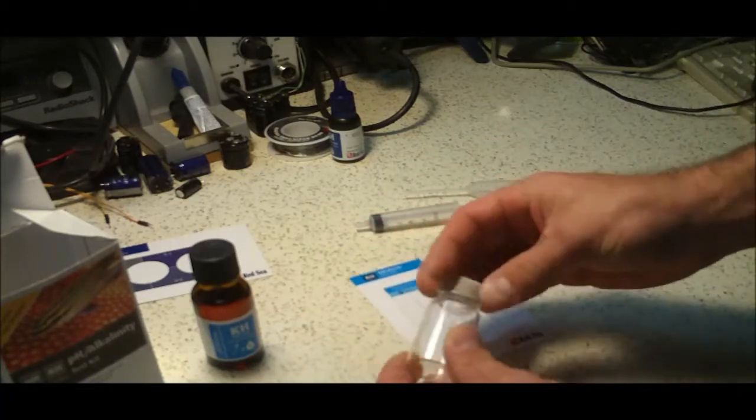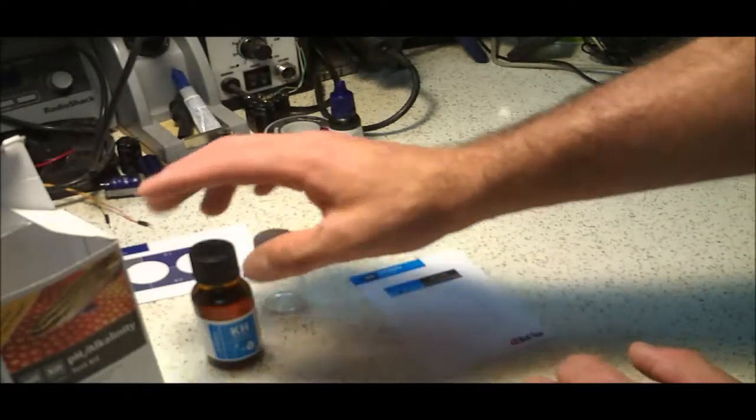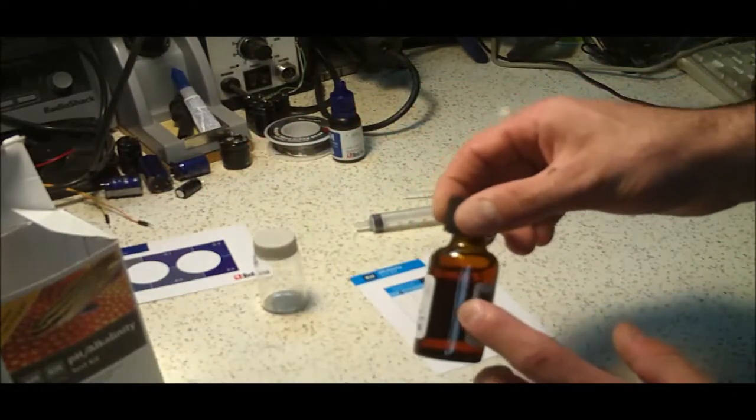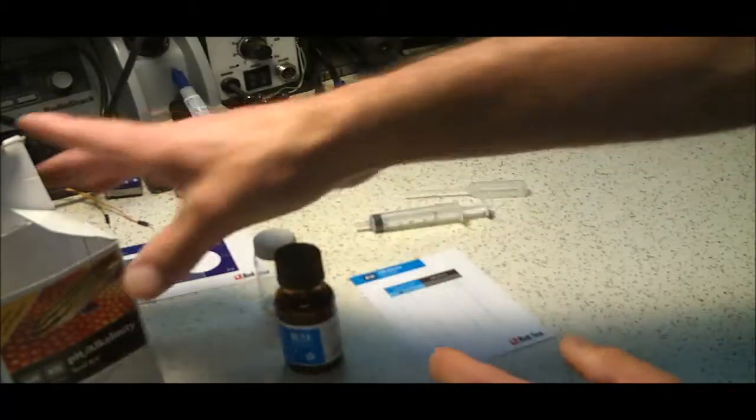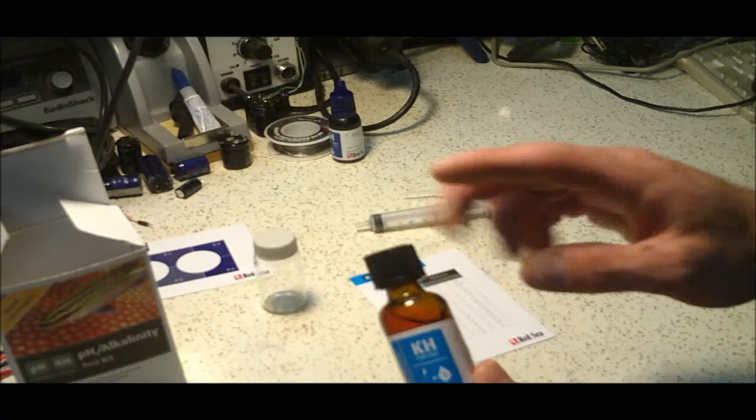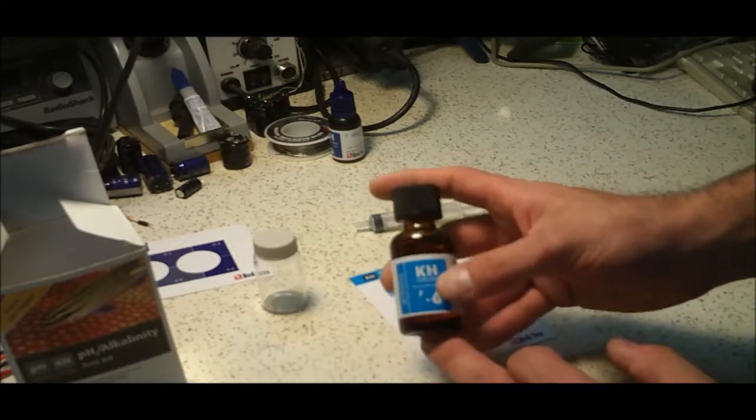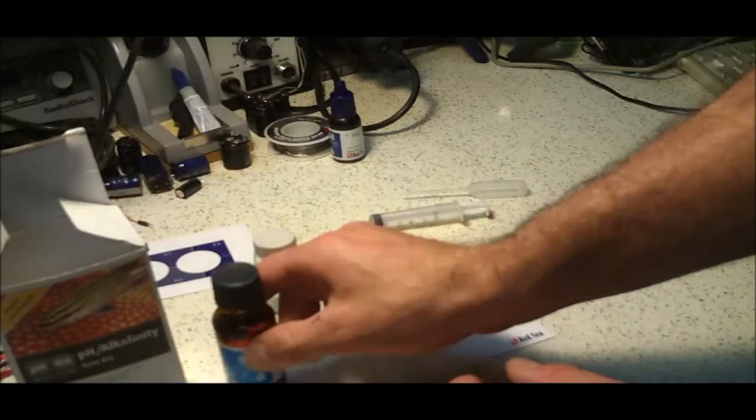As far as the glass vial goes, it seems like all the other glass vials that Red Sea gives, very nice quality. You get a good amount of KH solution. It says it's good for 55 tests. But Red Sea, they mean 55 full tests. So you could probably get actually more depending upon where your alkalinity range is.